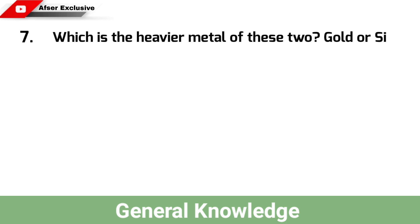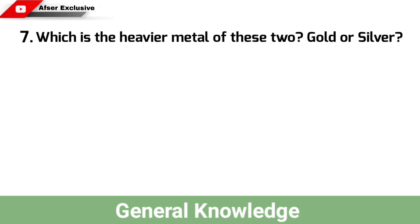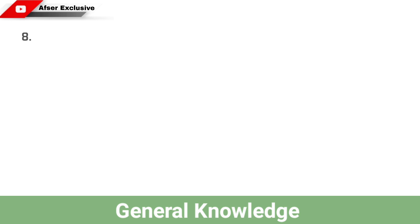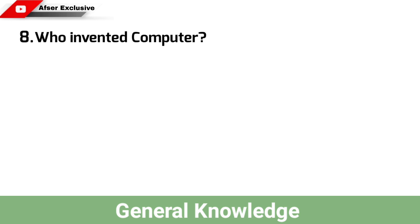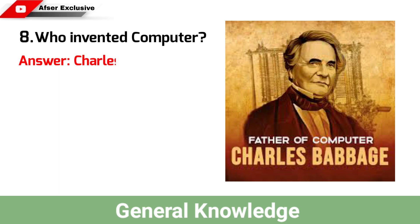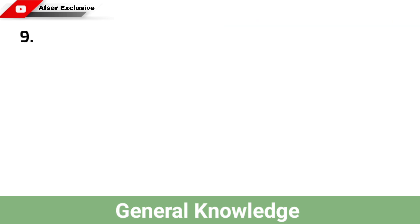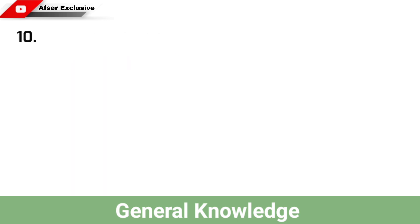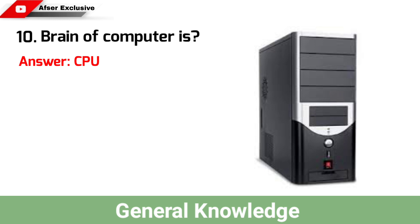Which is the heavier metal of these two — gold or silver? Answer: Gold. Who invented the computer? Answer: Charles Babbage. 1024 kilobytes is equal to? Answer: 1 megabyte (MB). The brain of the computer is? Answer: CPU.